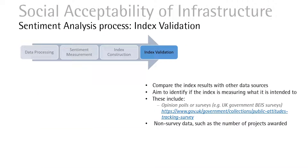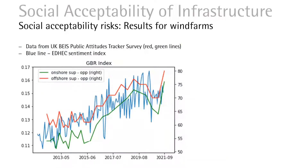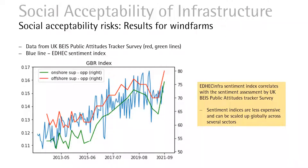The final step is index validation. We compare our index results against other data sources to ensure our estimated index is robust. In this presentation, we show the UK government's poll surveys on wind farms. We can also use non-survey data such as the number of projects awarded historically. We present the UK data as it has the best validation dataset — the BEIS Public Attitude Tracker Survey, which tracked public opinion back to 2012. We observe a high correlation between the index and the sentiment from the attitude tracker, giving us confidence that the methodology is useful in tracking public sentiment for the wind farm sector.